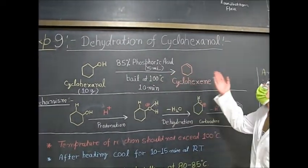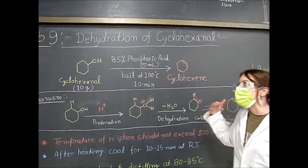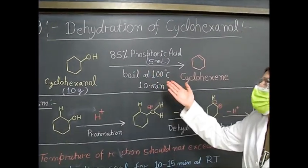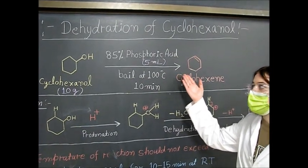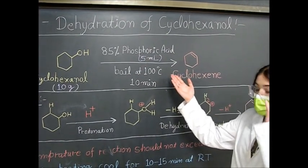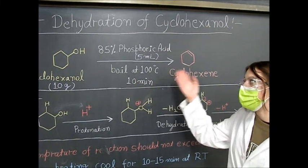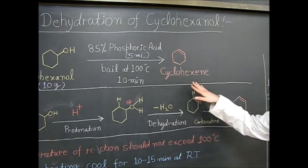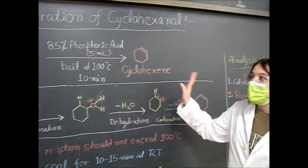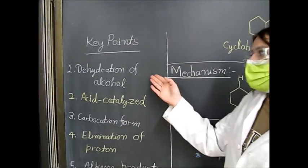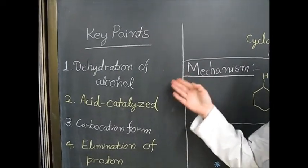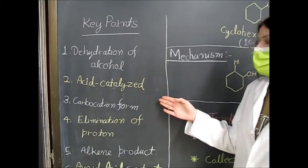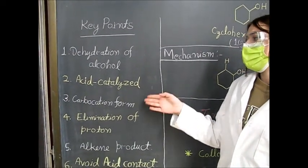Experiment 9: dehydration of cyclohexanol. In this lab, we will be using 10 grams of cyclohexanol and reacting with an 85% phosphoric acid solution using a fractional distillation. We will be boiling below 100 degrees Celsius for 10 minutes to get our product of cyclohexene. Some key points of this experiment: the process itself is dehydration of an alcohol, it is acid-catalyzed with the phosphoric acid solution, and it depends on the carbocation which is formed.